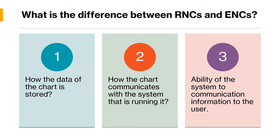ENCs stands for Electronic Navigation Charts and RNC stands for Raster Navigation Charts. The fundamental difference between them comes down to how the data of the chart is stored, how the chart communicates with the system running it, and the ability of that system to communicate information to the user. With ENCs, each object — each line, object, color, area, and symbol — has a digitally described position and is encoded.